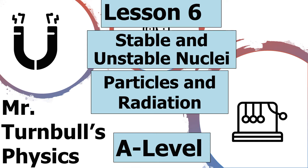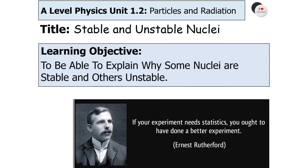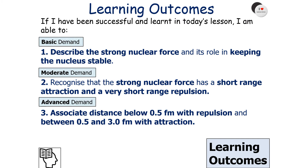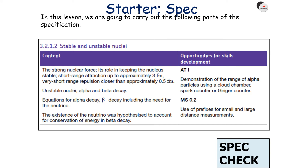Hello and welcome to today's lesson where we're going to look at stable and unstable nuclei, which is part of the particles and radiation topic in AQA A-level physics. In today's lesson we're going to try to explain why some nuclei are stable and others are unstable. We should be able to describe the strong nuclear force and its role in keeping the nucleus stable, recognise that it has a short range attraction and a very short range repulsion, and associate distances below 0.5 femtometres with repulsion and between 0.5 and 3.0 femtometres with attraction.